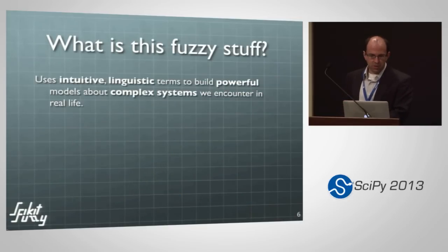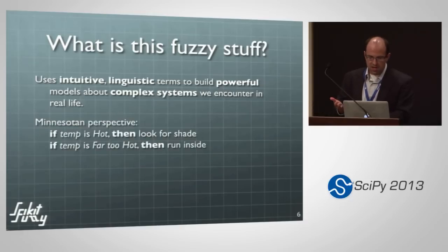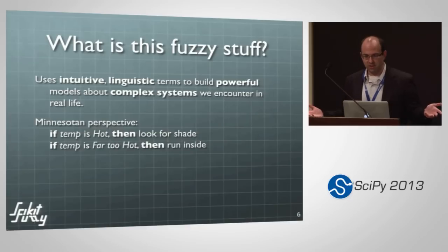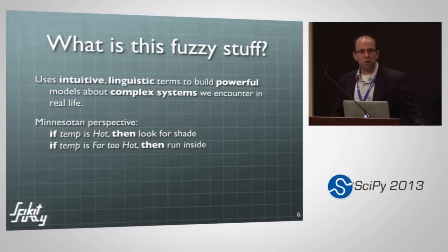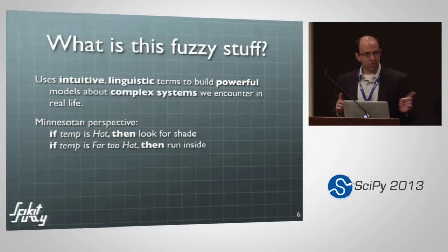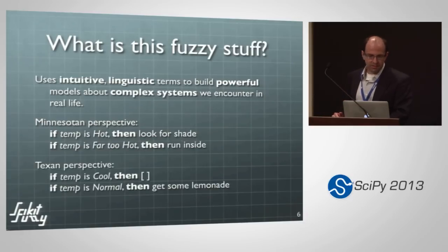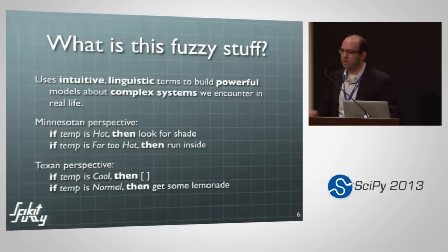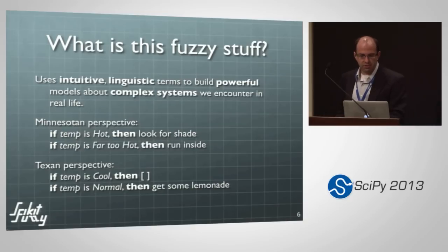We can translate what we just said into fuzzy rules: if the temperature's hot, then I'm looking for shade — I want to get out of the sun. If it's far too hot, then I'm running inside. Another point of fuzzy logic is that things don't have to add up to one, and more than one thing can be activated at a given time. So it's perfectly reasonable to be looking for shade while running inside. It's also fine to have a sparse system where not everything has an action — if it's normal, just get some lemonade.